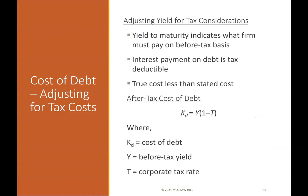Cost of debt — adjusting for tax costs: The yield to maturity indicates what the firm must pay on a before-tax basis. Since interest payments on debt are tax deductible, the true cost is less than the stated cost. The after-tax cost of debt KD equals Y × (1 − T), where Y is the before-tax yield and T is the corporate tax rate.